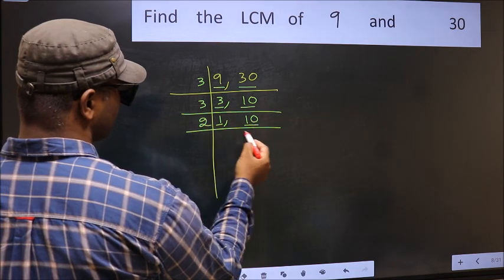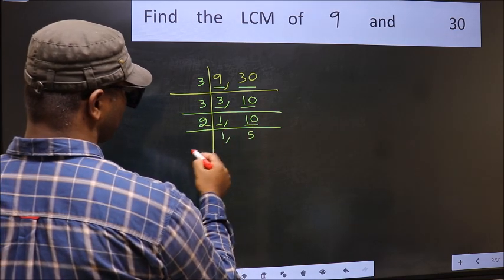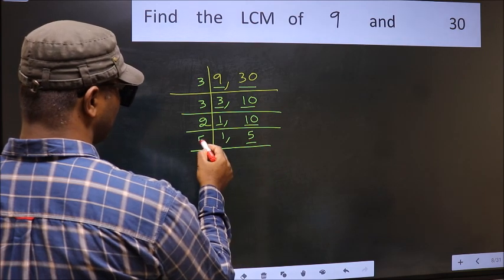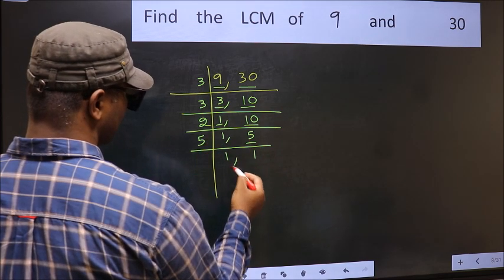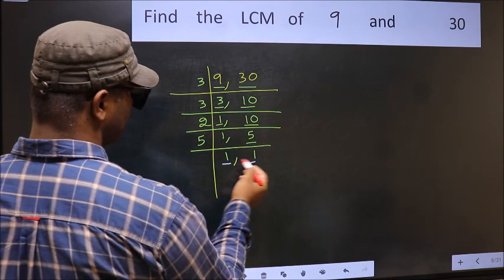10 is 2 times 5. Now we have 5. 5 is a prime number, so 5 times 1 is 5. So we got 1 in both places.